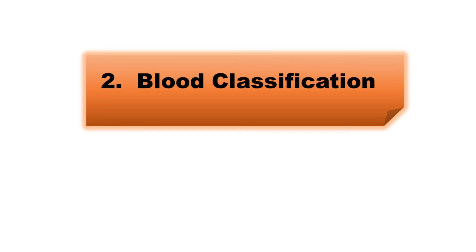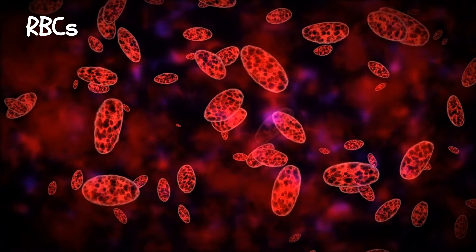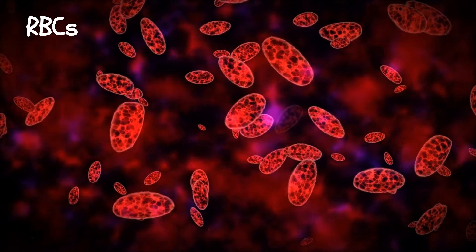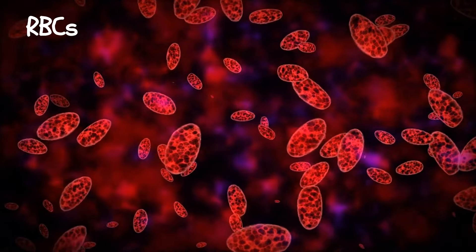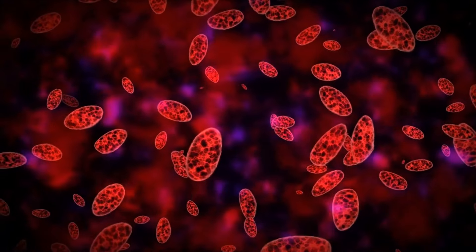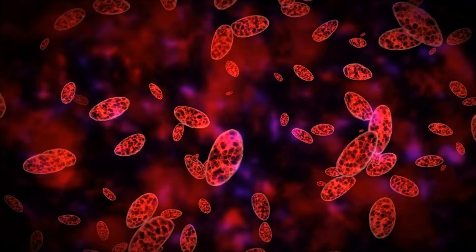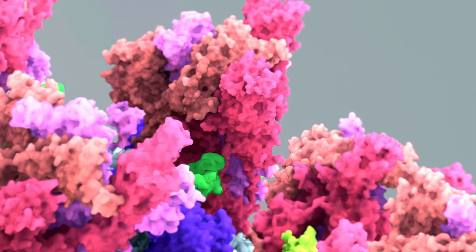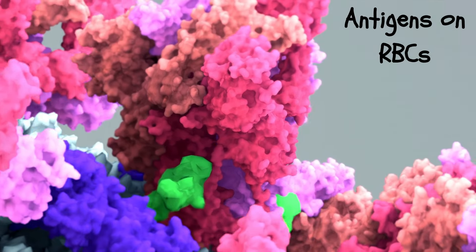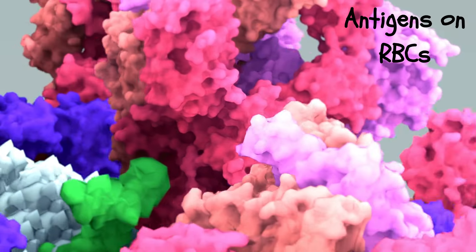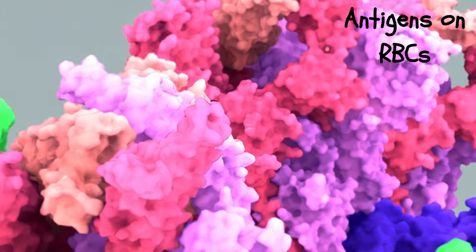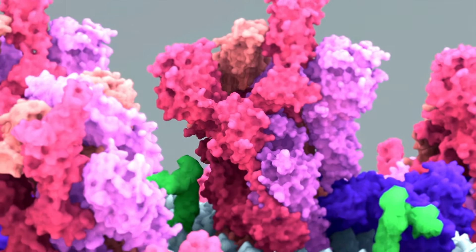Now, let's explore blood classification. Blood is classified into groups determined by the presence or absence of specific antigens on the surface of red blood cells. These antigens can be proteins, carbohydrates, glycoproteins, or glycolipids, depending on the blood group system.